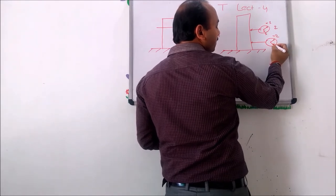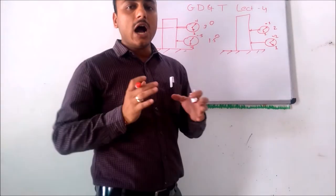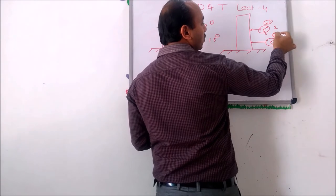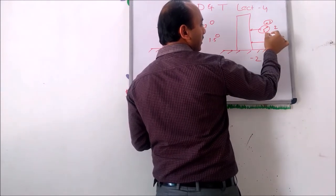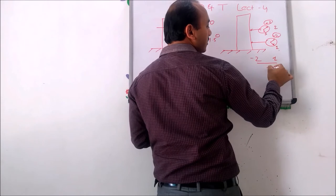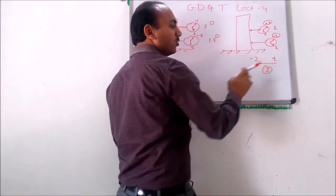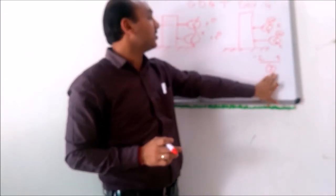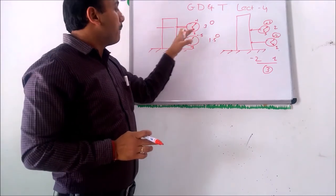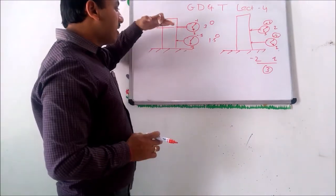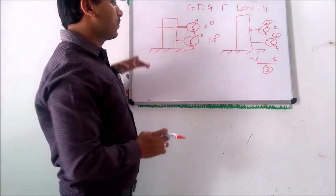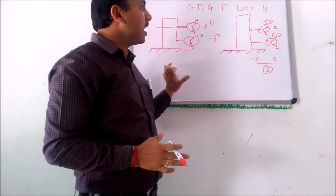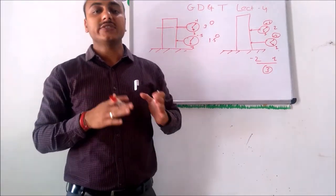Then I place the dial gauge at another position, revolve, and get readings of minus 2 and plus 1. For cylindricity, the extremes of all positions are combined — the extreme minimum is minus 2 and the maximum is plus 1, giving a difference of 3. So the cylindricity error is 3, combining all readings. Whereas for circularity, each particular section is measured independently — the readings are not clubbed together. This is how we differentiate measuring circularity versus cylindricity.